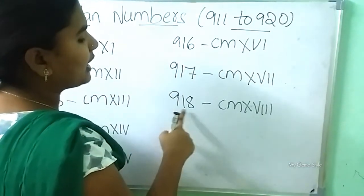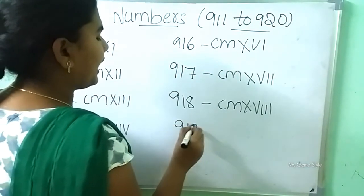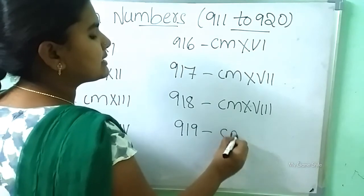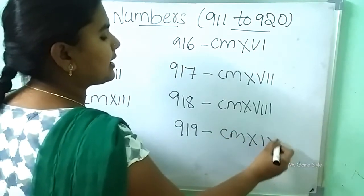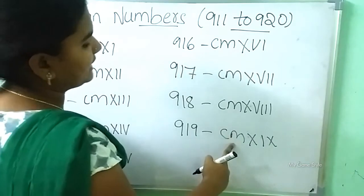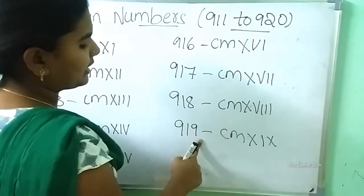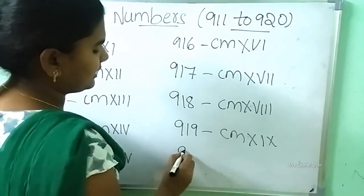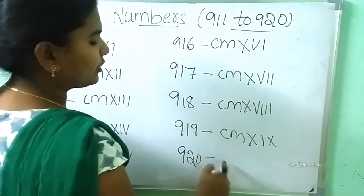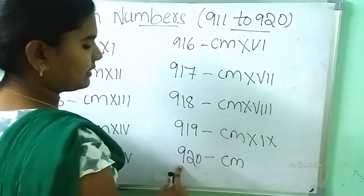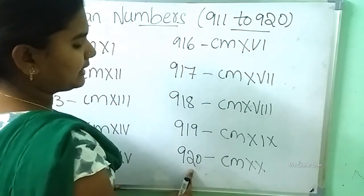After 918, what number will come? 919. Now CM is 900. XIX is 19. So this means 919, written as CMXIX. After 919, 920. Now how to write? CM is 900. XX is 20. So this means 920, written as CMXX.